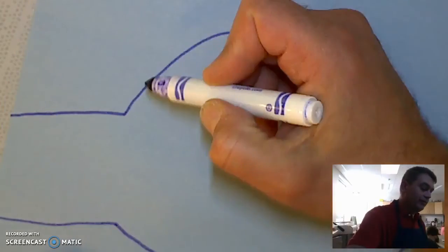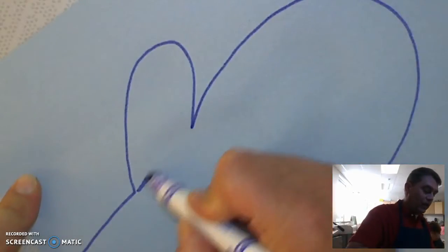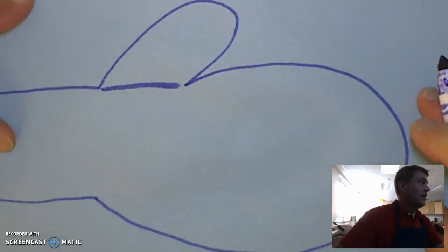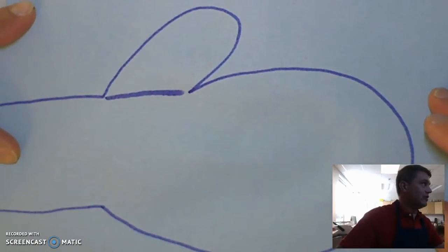And to start you're going to make a line across your thumb. See how I made that line across the thumb? So you'll do that first, so go ahead.